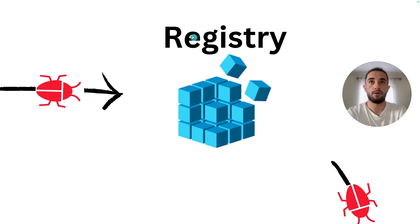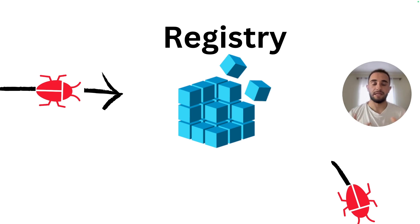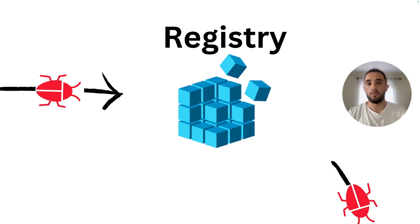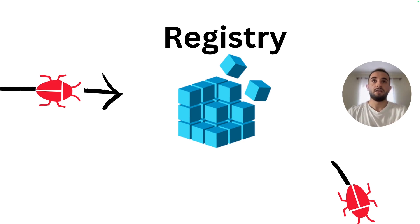Every time an update or change happens — a driver change or any change in your Windows operating system — it is saved in the Windows Registry. The Windows Registry is a database or metadata store where different information, configurations, and changes you make to your computer are saved. The registry operates at a very low level. You may have noticed that when you try to make changes to a registry key, Windows always warns you, because it directly impacts a low-level component of your computer and operating system.